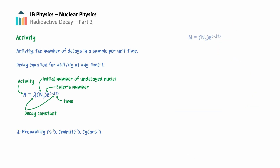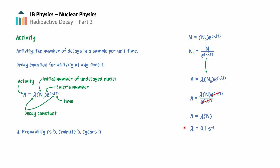Rearranging the decay equation to solve for n-sub-0, we see that n-sub-0 equals n divided by e to the negative lambda t. Substituting this into the activity equation, the exponential terms cancel, and we see that activity equals lambda times n, the number of undecayed nuclei. This shows that a high value for the decay constant leads to high activity. For example, if a radionuclide has a decay constant of 0.1 decays per second, then 10% of the sample will decay every second.